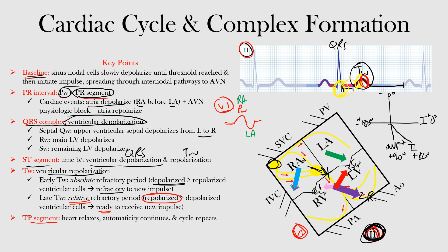Lastly, we have the TP segment — almost the baseline. The TP segment is typically electrically neutral and represents the time in which the heart is relaxing, automaticity is continuing, and then the cycle will repeat itself. Our TP segment goes from the end of the T wave to the next P wave — an electrically neutral area where the heart is relaxing and getting ready for the cycle to repeat itself.